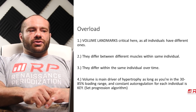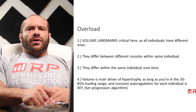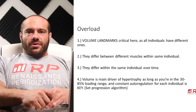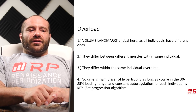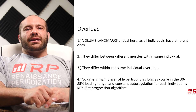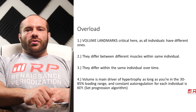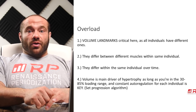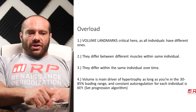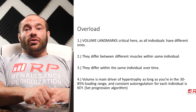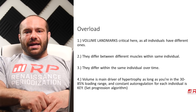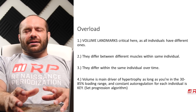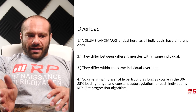Overload: individual differences affect the overload principle application. Volume landmarks are absolutely critical here. What is MEV for someone might not be MEV for someone else. What is MRV for someone might not be remotely very stimulating for someone else. And they differ between different muscles within the same individual — your biceps might need at least three sets per session to grow, your hamstrings might need six sets per session to grow, and there's no telling which one it is. Only auto-regulation can tell you that. And there are differences in the same individual over time: used to be your pecs grew from 10 sets of chest a week, now you need 12, and later you need 15 sets of chest a week to make noticeable gains. The same amount of training is not always going to lead to robust gains because muscles adapt over time.